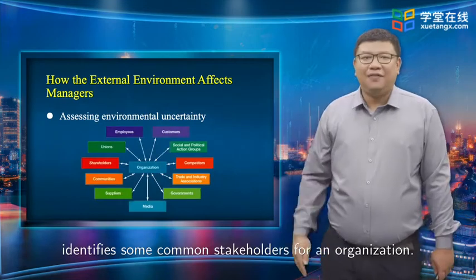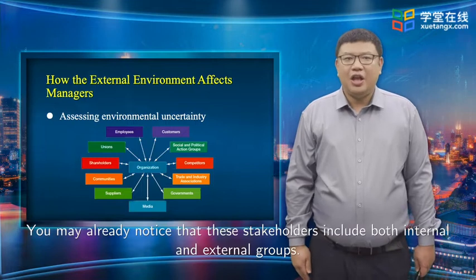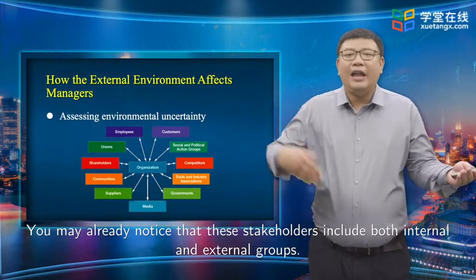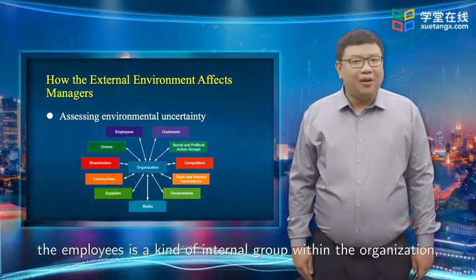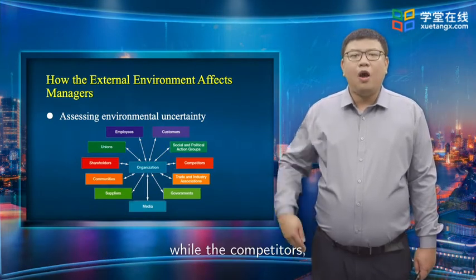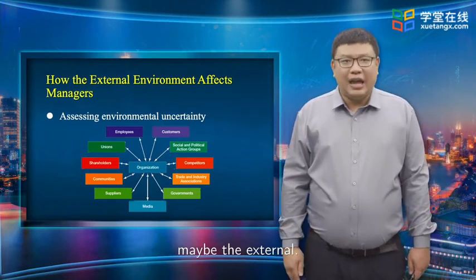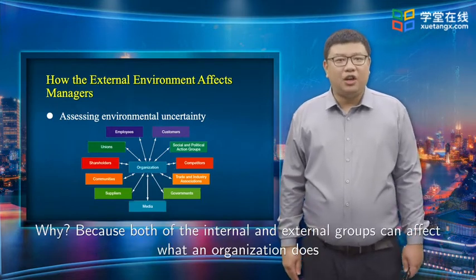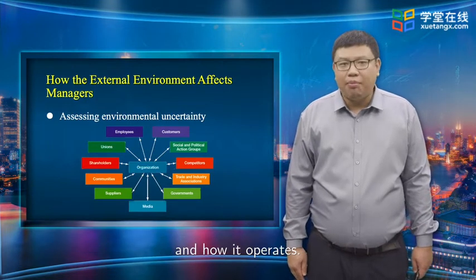A chart identifies common stakeholders for an organization. These stakeholders include both internal and external groups. For example, employees are a kind of internal group within the organization, while competitors, government agencies, and media may be external groups. Both internal and external groups can affect what an organization does and how it operates.